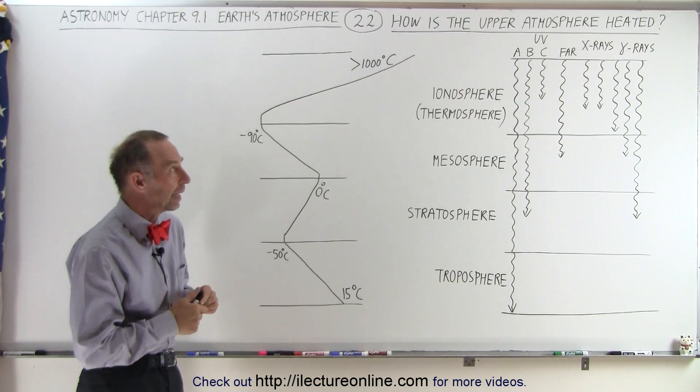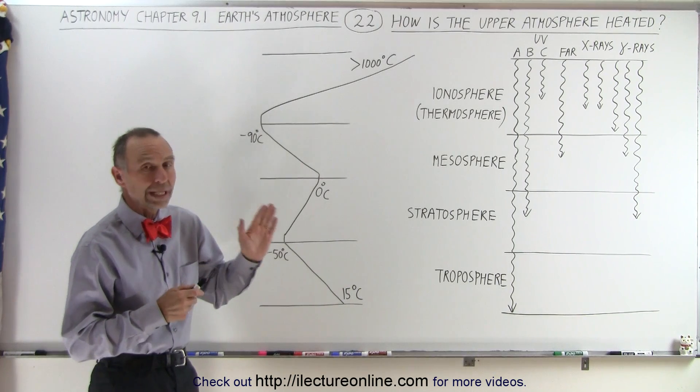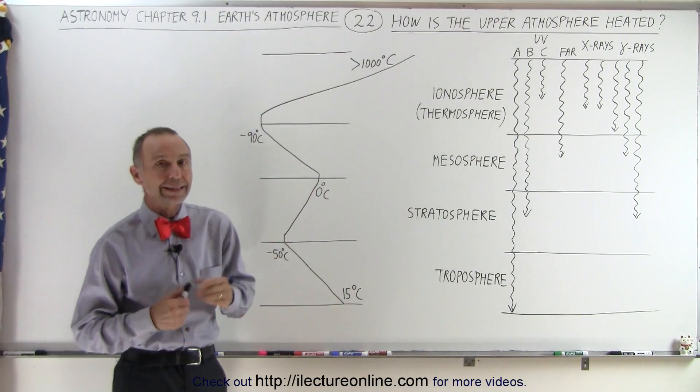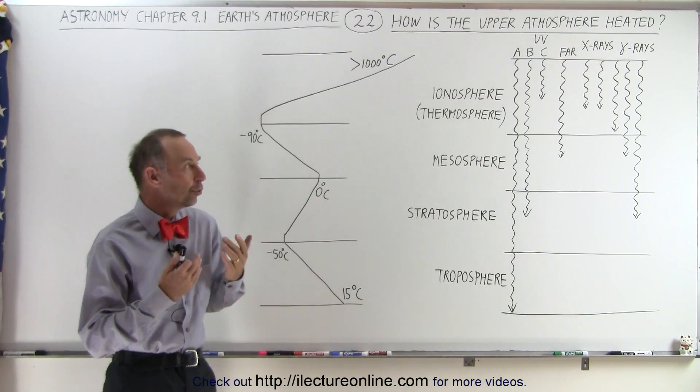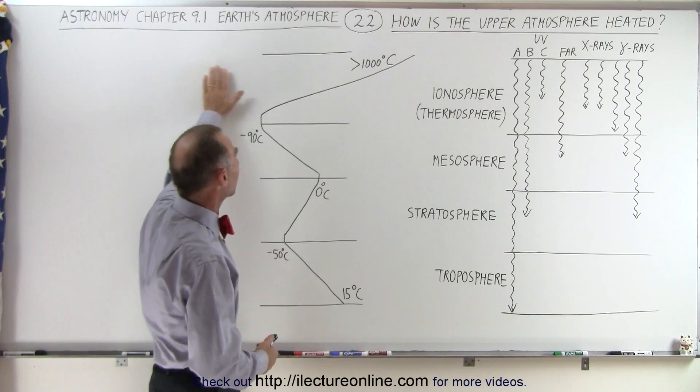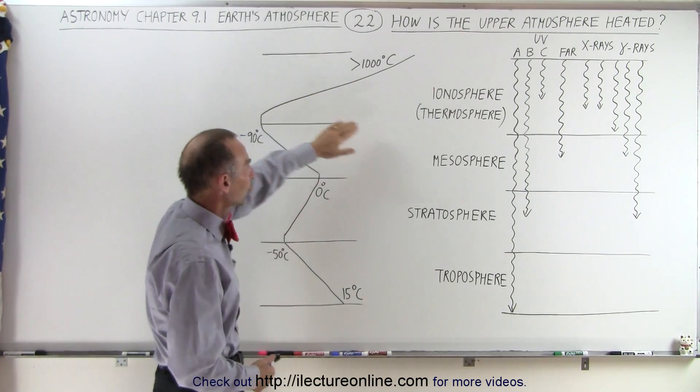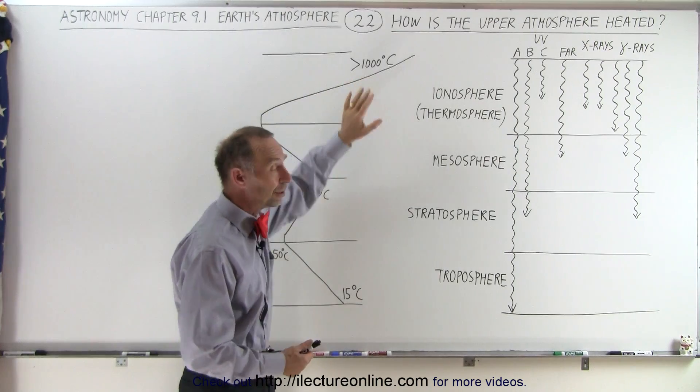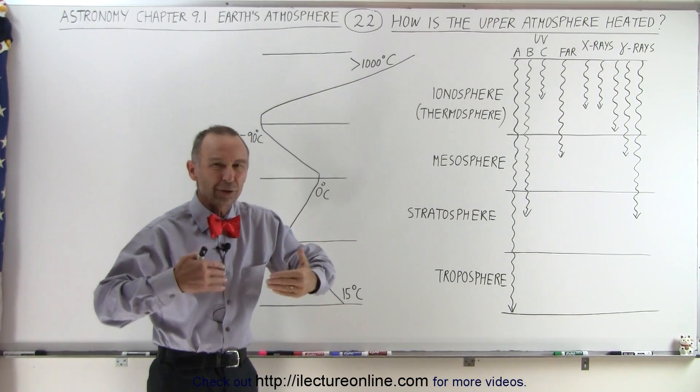Let's first start talking about the really high energy radiation: UV, x-rays, and gamma rays. That radiation is primarily responsible for heating up the ionosphere, which is also called the thermosphere, and for good reason because it can get quite hot up there, but not because the air is very dense.